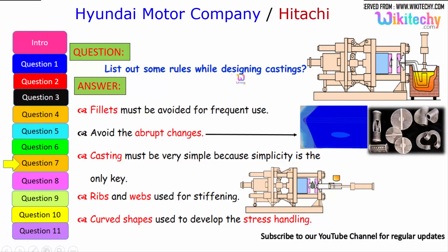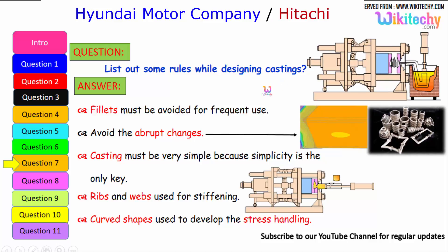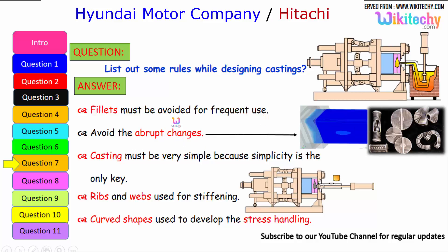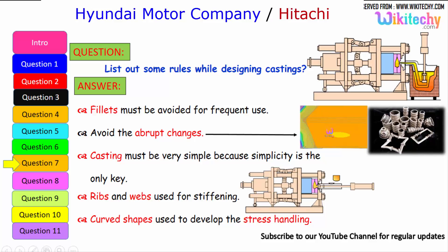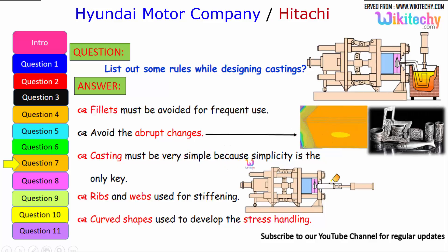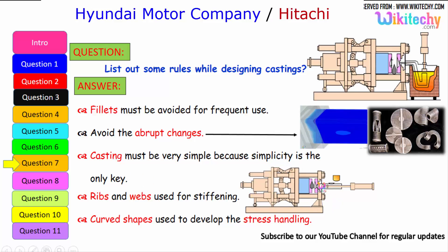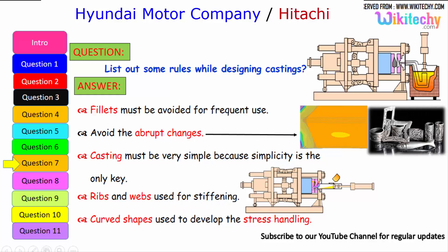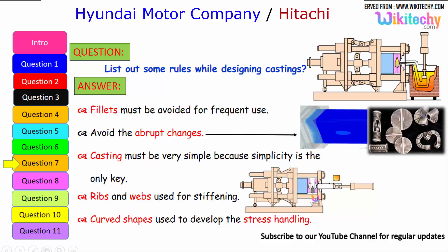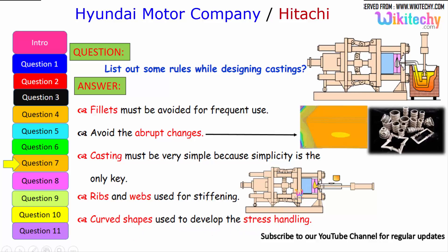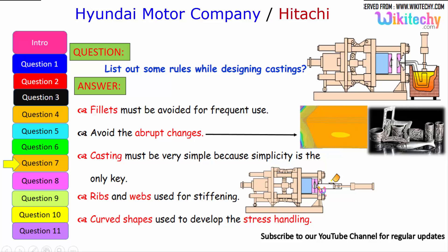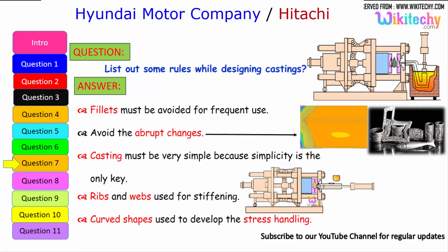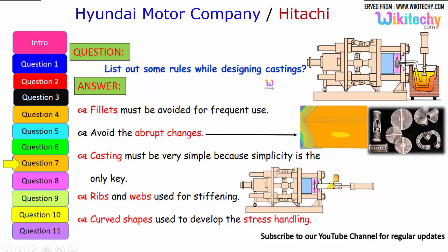Let us see some rules to follow while designing castings. Fillets must be avoided for frequent use. Avoid abrupt changes in section. Castings must be kept very simple, as simplicity is key. Ribs and webs are used for stiffening. Curved shapes should be used to improve stress handling. These are the rules to follow for casting design.